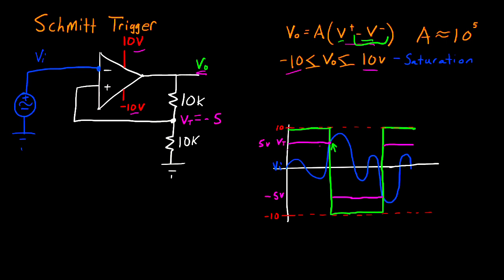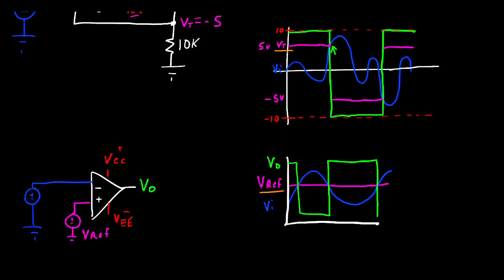Now that we've seen how the Schmidt trigger behaves, let's compare this to how a standard comparator works. For the comparator, every time that Vi crosses that constant reference voltage, Vout changes state. Now you might be thinking this is fine, and in some cases it is.